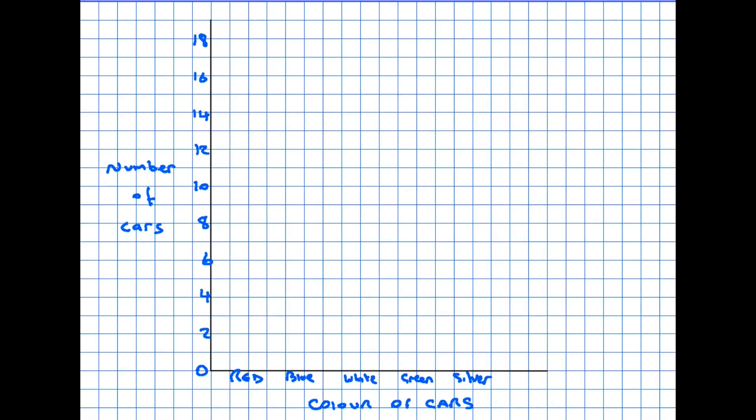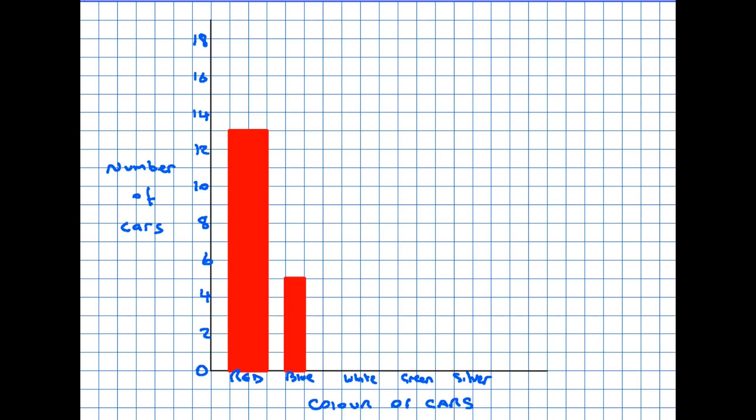Right, let's actually now put some information into the graph, so we need to put our bars in place. If we look at the number of cars, red ones, there were 13, so that's how high the bar needs to go. It doesn't actually matter how wide this bar is, I could have made it one square wide, I've chosen two. What is important in a bar chart is that there is a gap in between each bar. So when I put the blue cars in and there were eight of them, there's my eight, and in between there is a space.